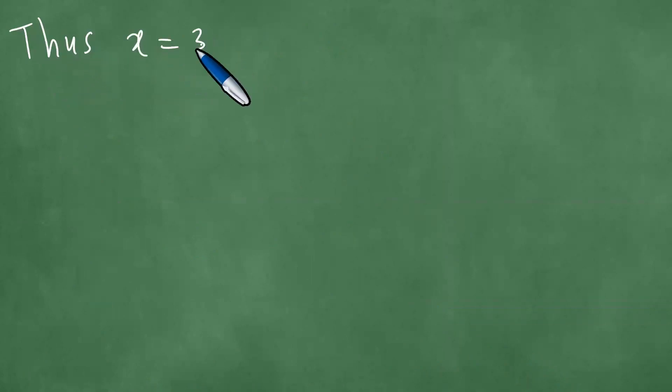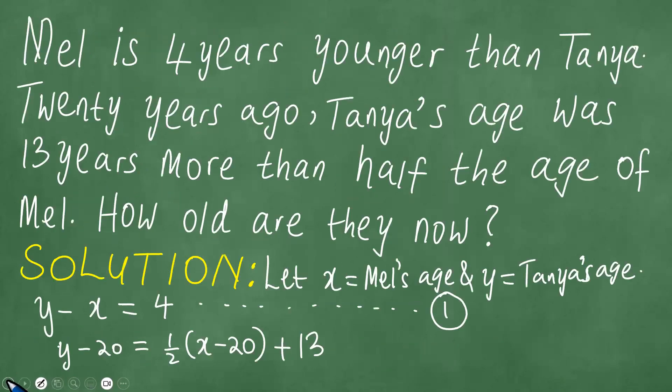Thus, X = 38 and Y = 42. What is the meaning of this? We remember that X is Mel's age and Y is Tanya's age.